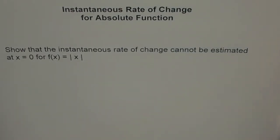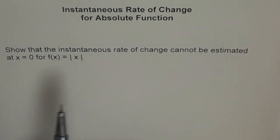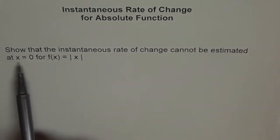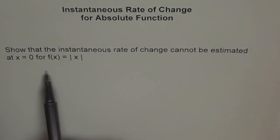This is a very interesting question. Here we are trying to find instantaneous rate of change for absolute function. The question is, show that the instantaneous rate of change cannot be estimated at x equals 0 for f(x) equals absolute x.